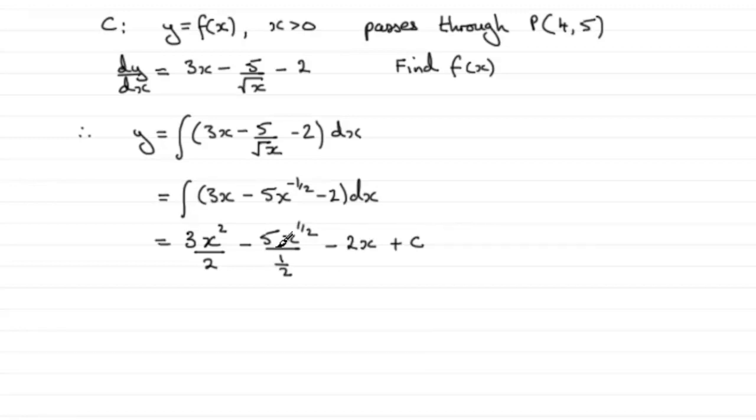Now, we need to tidy this up. When we tidy this up, this term, just leave it as 3x squared over 2. For this one, we times top and bottom by 2. That gives us 5 times 2, which is 10 x to the power half over 1. Well, obviously we can ignore the 1. This term minus 2x and then we've got the constant of integration plus c.